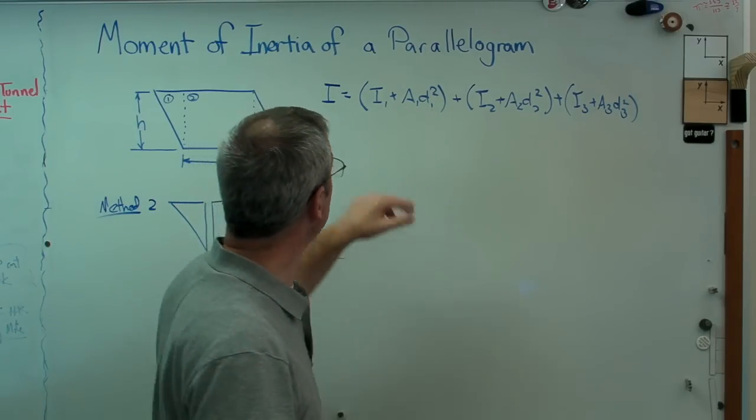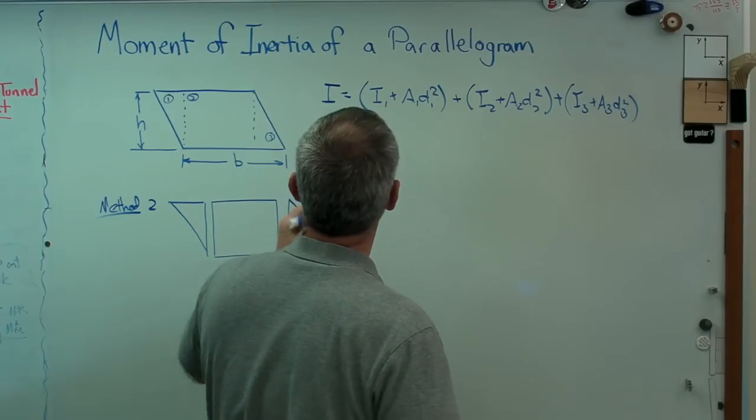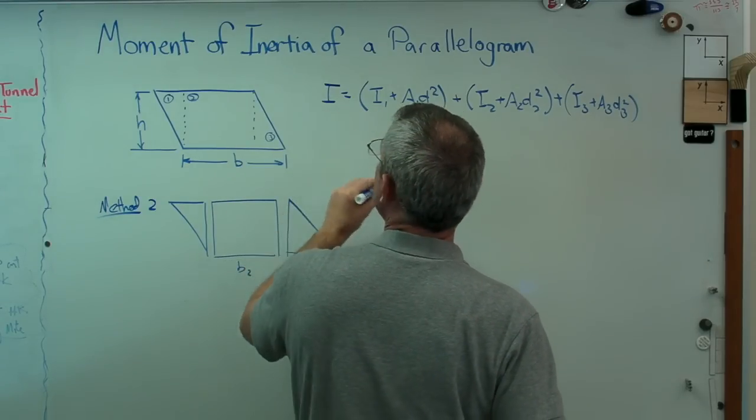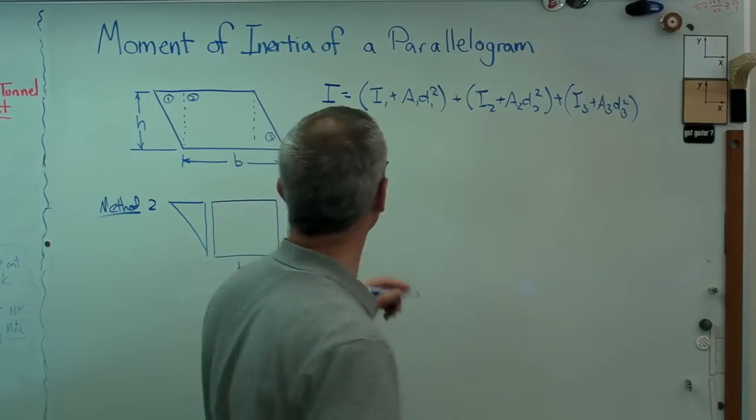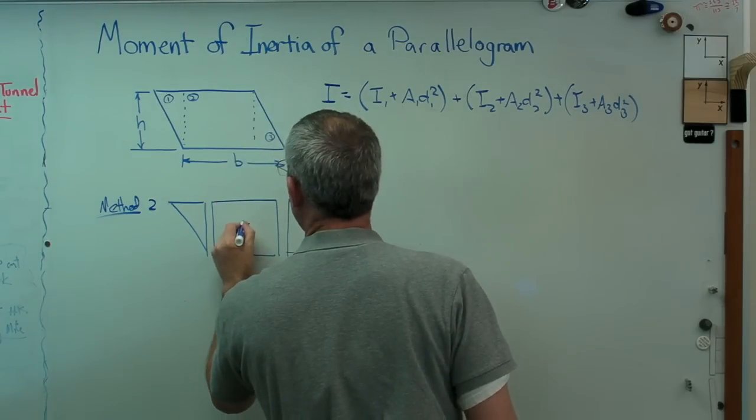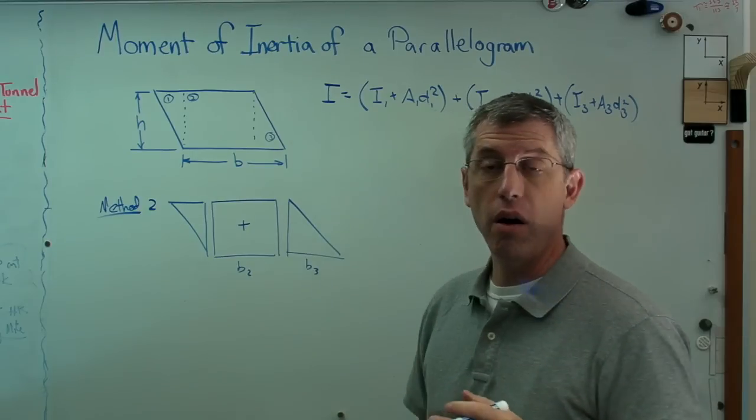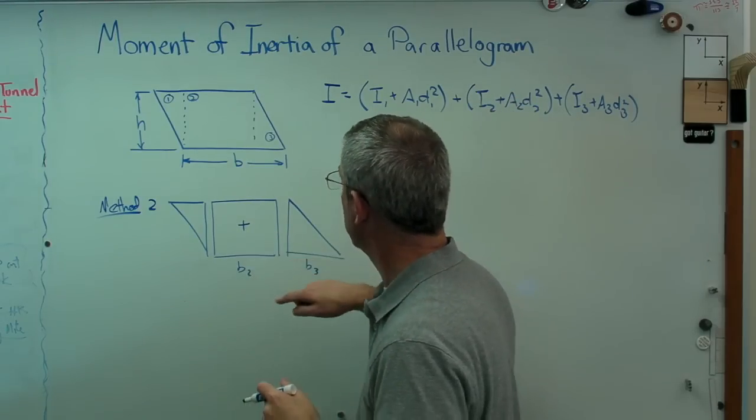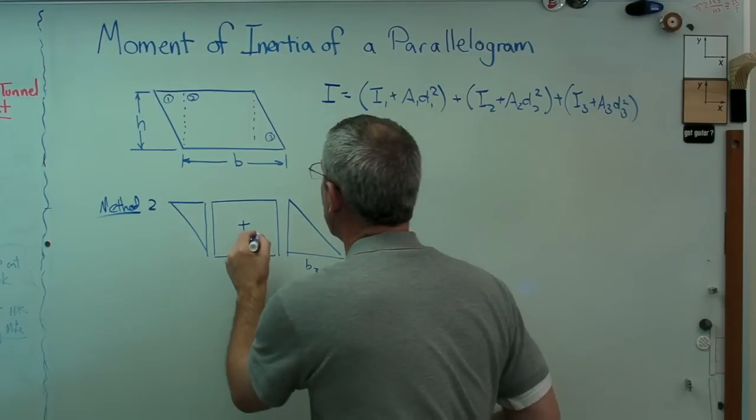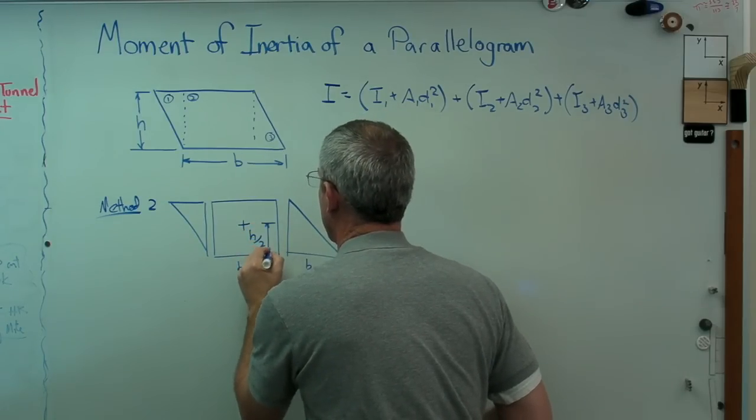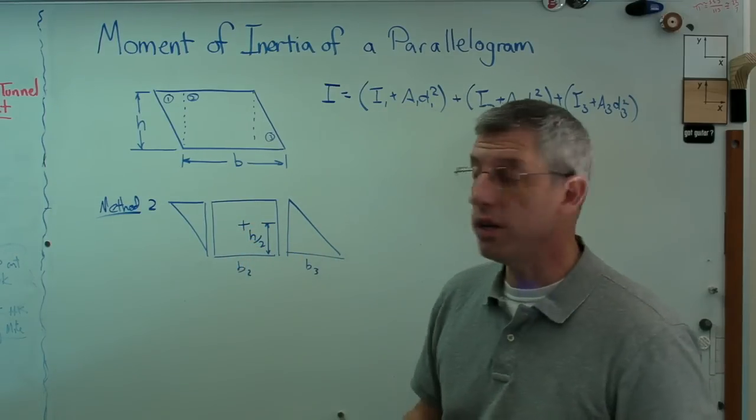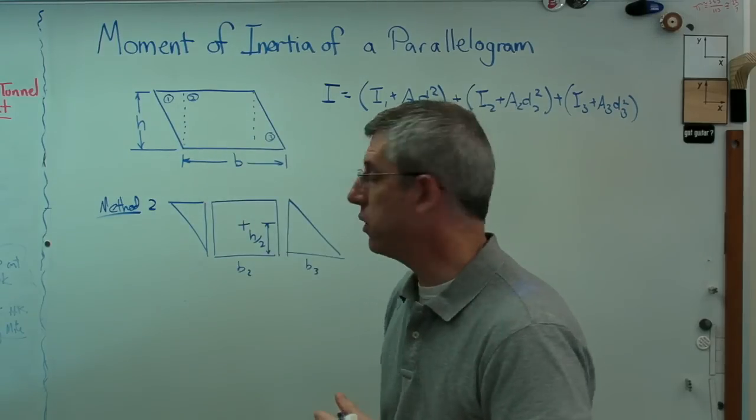Let's start going through this. I'm going to do this without numbers right now. The centroid of the center box is h over 2, and the centroid of the entire shape is also h over 2.